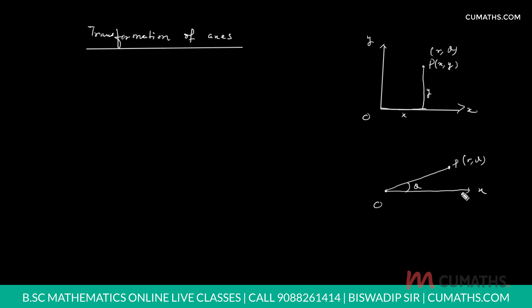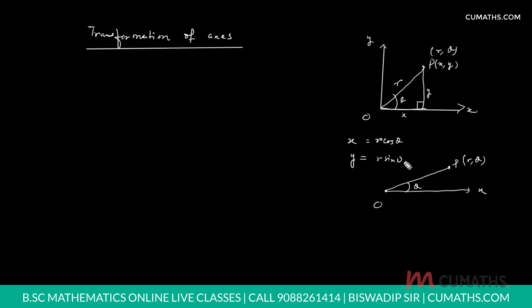I have a topic on polar equations where I explained all the concepts about the polar system. If we consider this point P in polar system as (r, theta), we know this distance and this angle theta. From this right angle triangle, we get the relation: x equals r cosine theta and y equals r sine theta. From this relation, we can convert Cartesian coordinates to polar coordinates, and also polar coordinates to Cartesian.